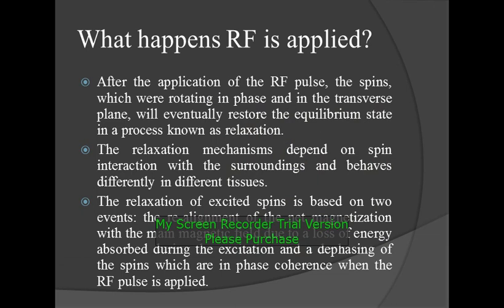What happens when RF is applied? After the application of the RF pulse, the spins which were rotating in phase in the transverse plane will eventually restore the equilibrium state in a process known as relaxation. The relaxation mechanism depends on spin interaction with the surroundings and behaves differently in different tissues. The relaxation of excited spins is based on two events: the realignment of the net magnetization with the main magnetic field due to loss of energy absorbed during excitation, and the dephasing of the spins which are in phase coherence when the RF pulse is applied.